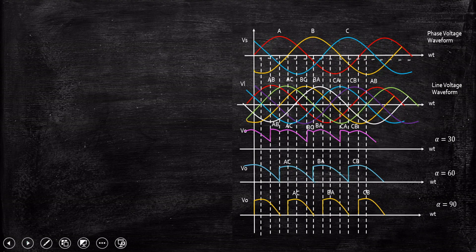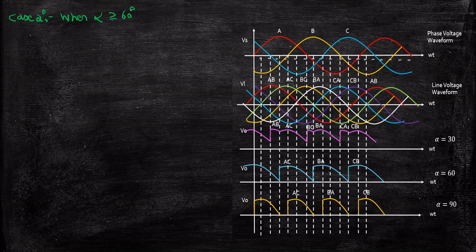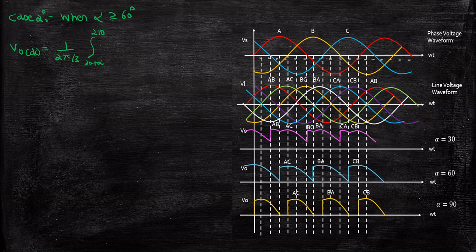Now let's look at Case 2: alpha greater than or equal to 60 degrees (discontinuous conduction mode). The total time period remains 2π/3 (120 degrees). Observing the waveform, the output starts at 30+α as usual and goes up to 210 degrees. There is only one line voltage term per cycle — V_AC, which is √3·V_m·sin(ωt − 30°) d(ωt).